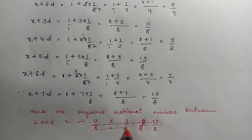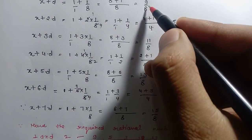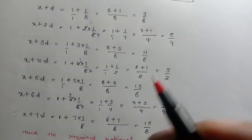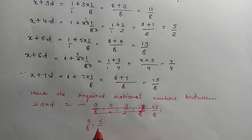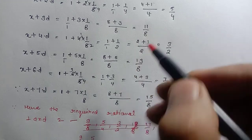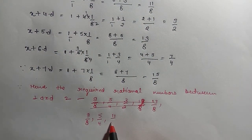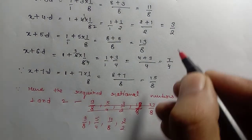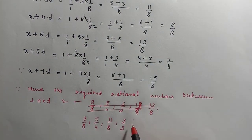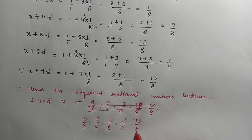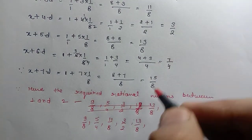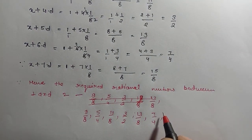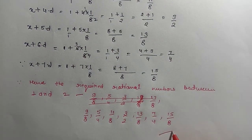So, the required rational numbers between 1 and 2 are: First: 9 by 8. Second: 5 by 4. Third: 11 by 8. Fourth: 3 by 2. Fifth: 13 by 8. Sixth: 7 by 4. And seventh: 15 by 8.